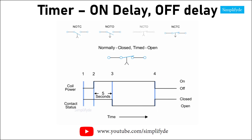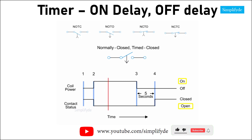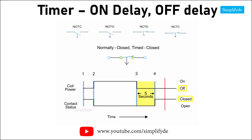The last time delay relay we will look at employs a normally closed timed closed (NCTC) contact. Similar to the NCTO contact, this type of contact is normally closed when the coil is de-energized, and opened by the application of power to the relay coil. However, unlike the NCTO contact, the timing action occurs when the coil is de-energized instead of when it is energized. Thus, the contacts open immediately when the coil is energized, and close five seconds after the coil is de-energized.